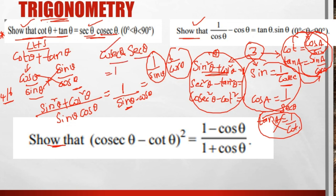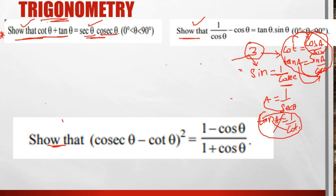RHS is proved. To summarize, you apply three formulas: identity, cot/tan formula, and reciprocal. These three formulas are enough to save and solve these problems.